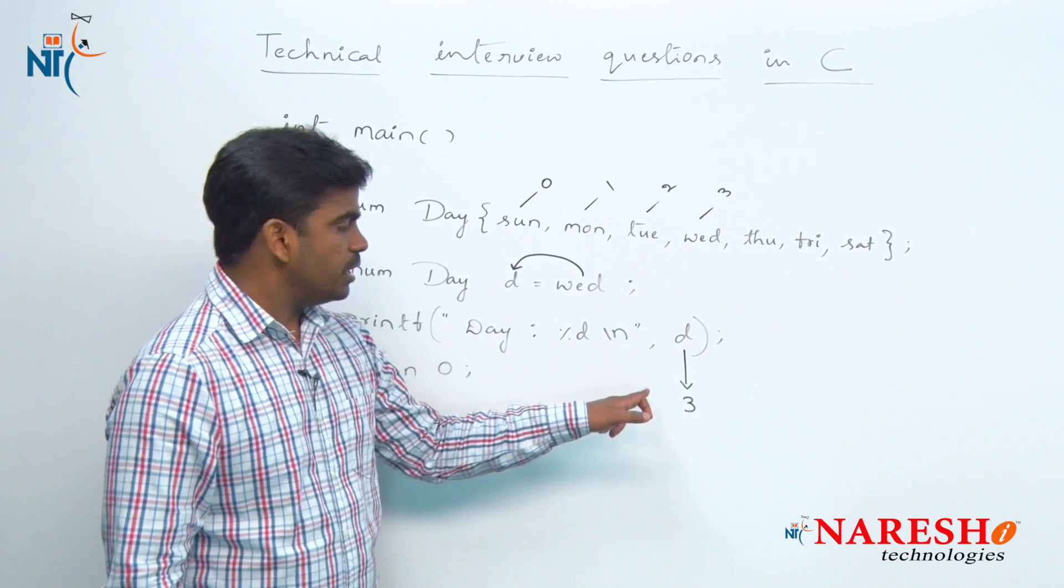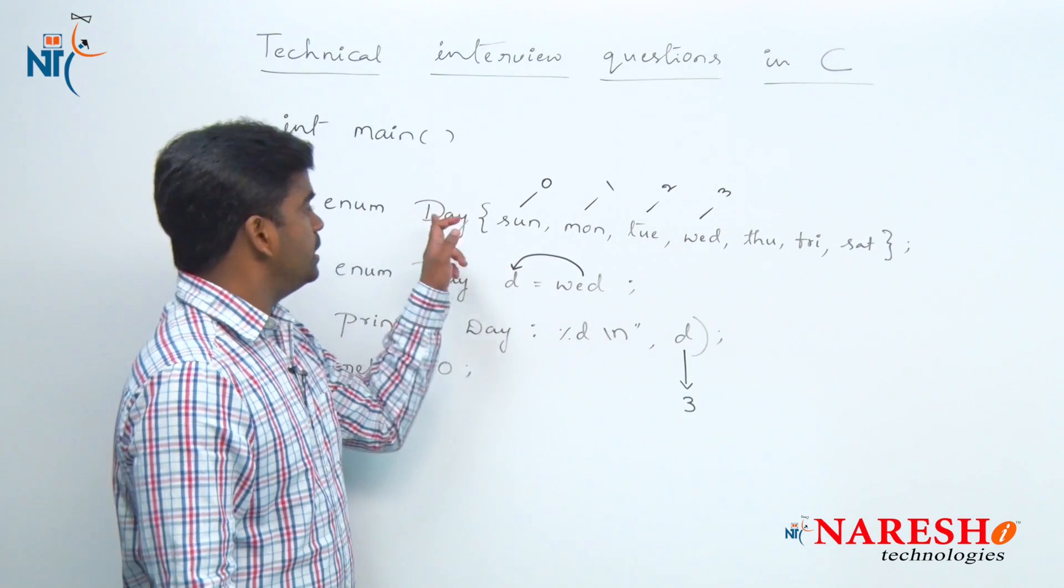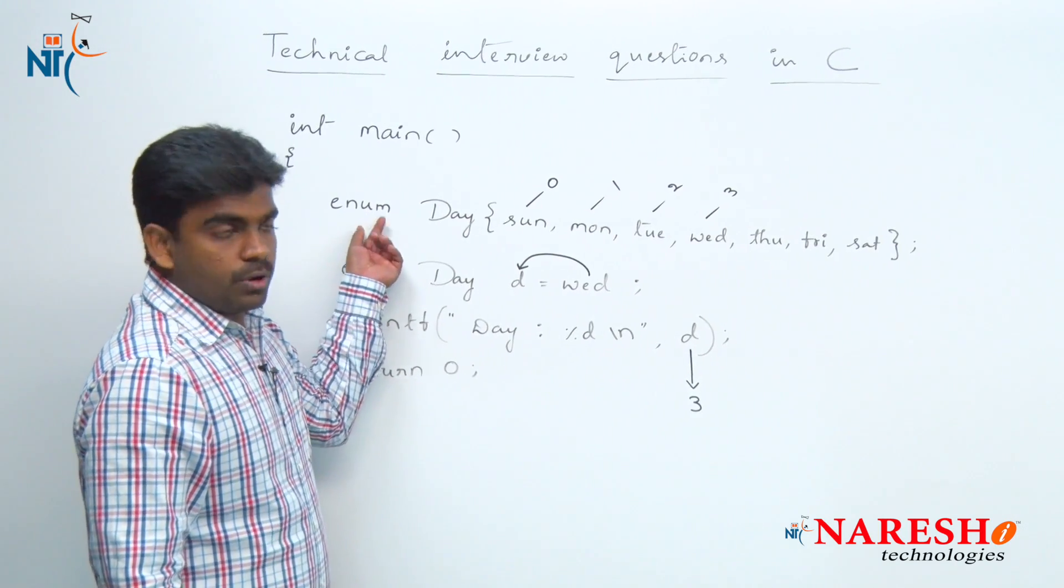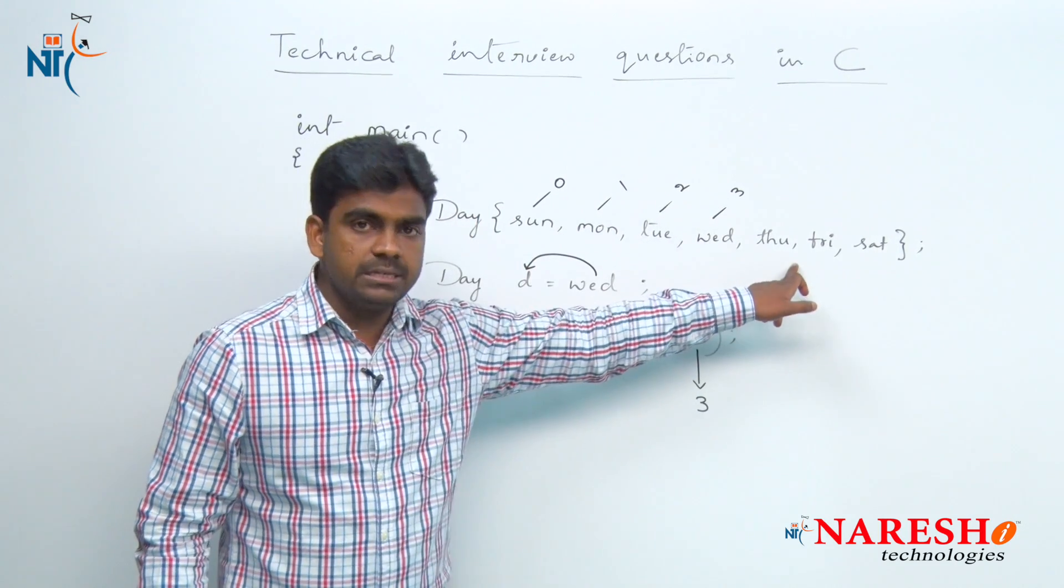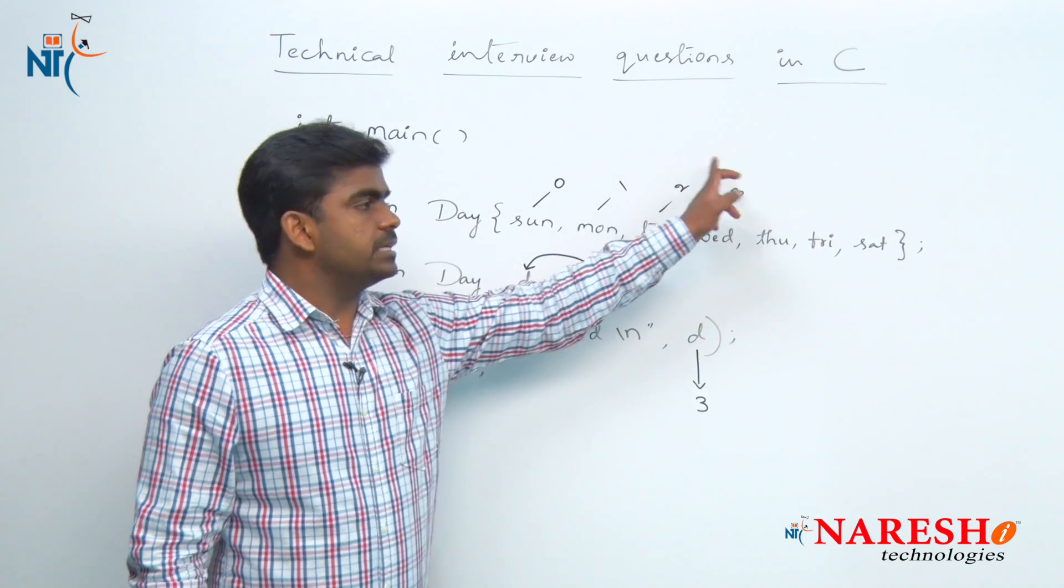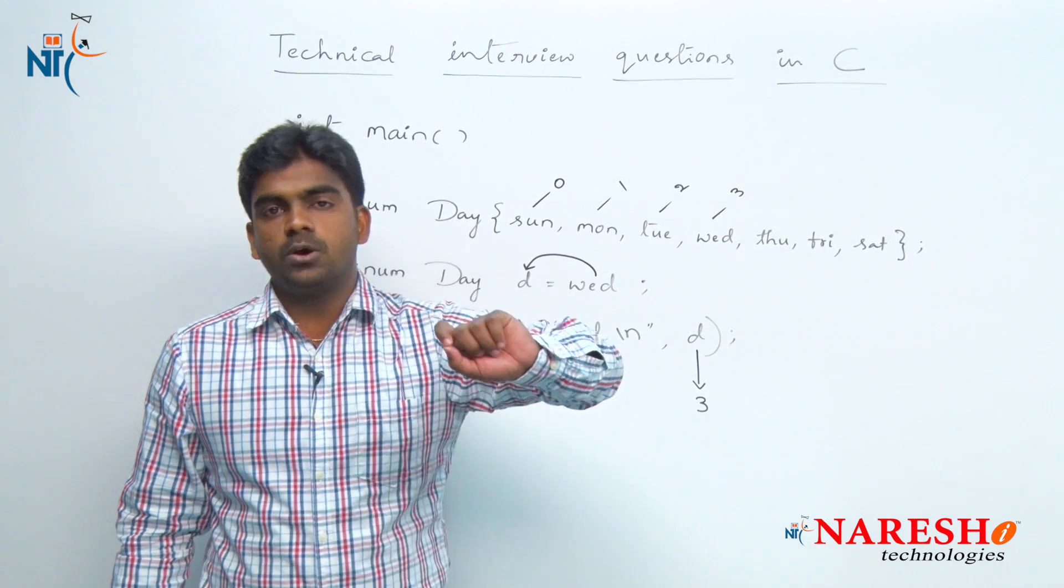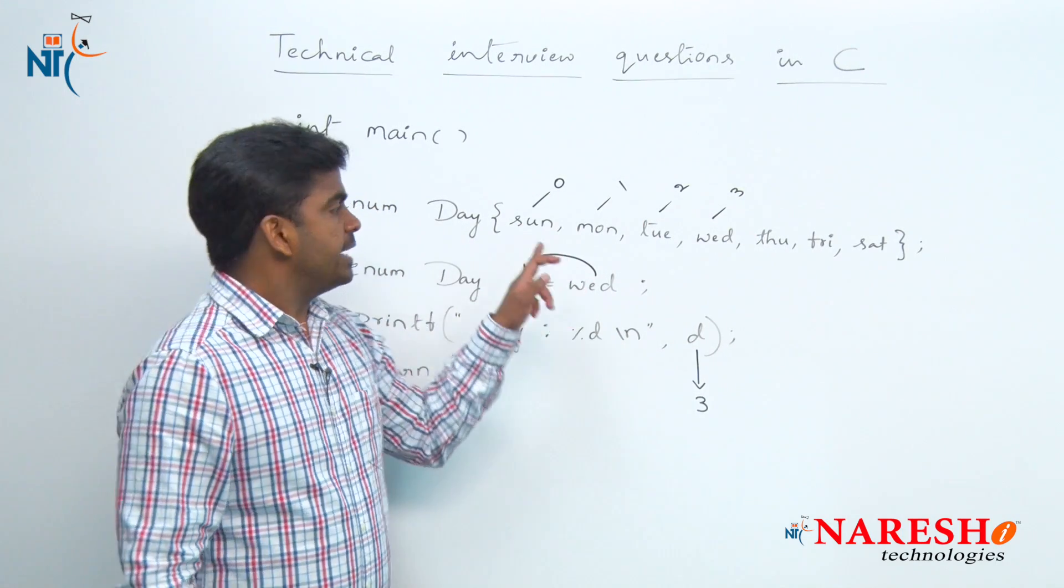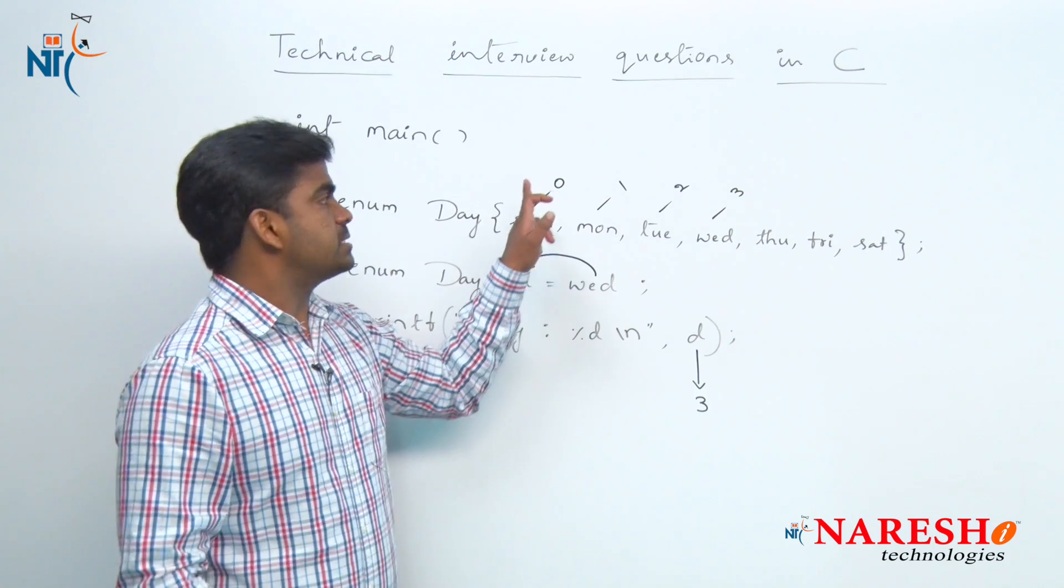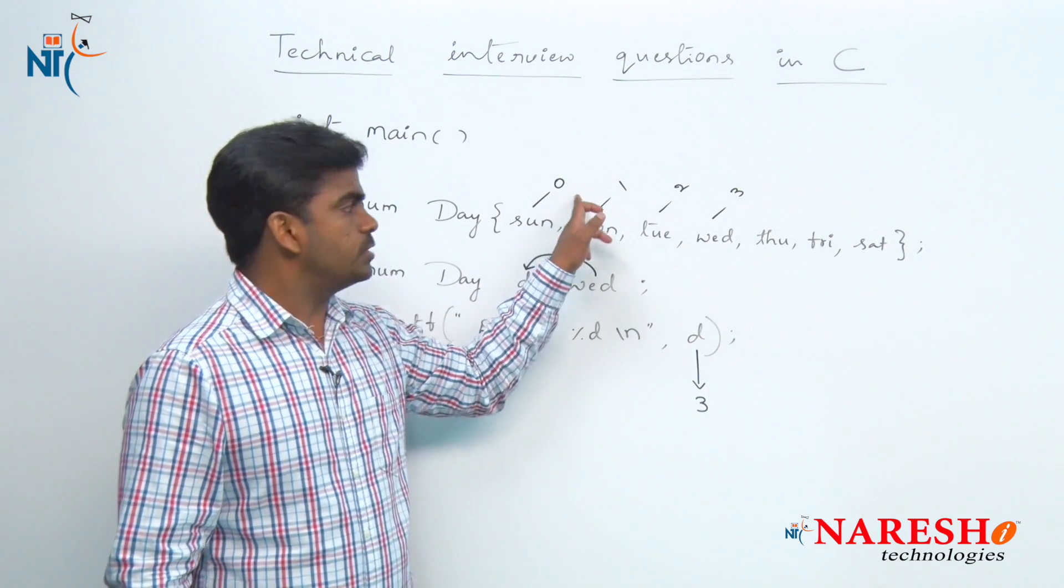So output of the program is what? 3, right? Here the enum is a concept of working with a set of elements using constant integer values. If you do not set constant integer values, integer values automatically set. It starts with 0, 1, 2, 3.